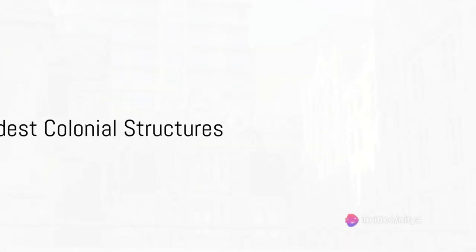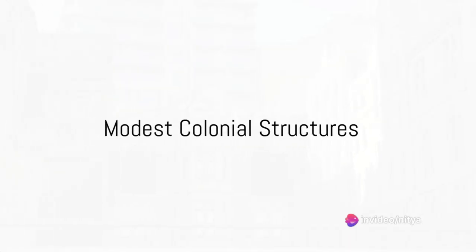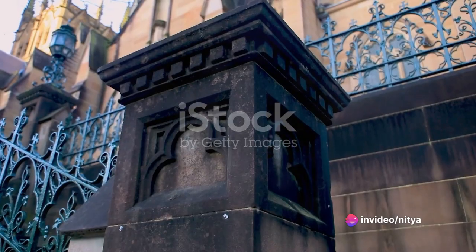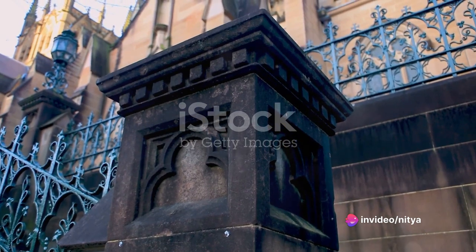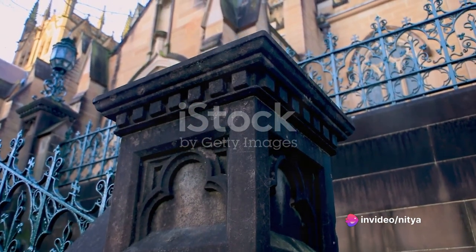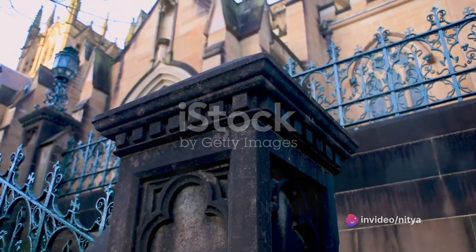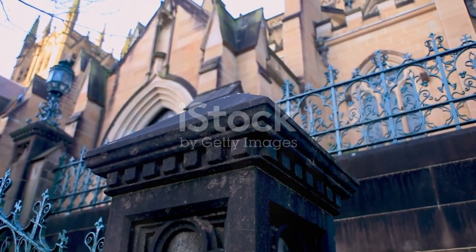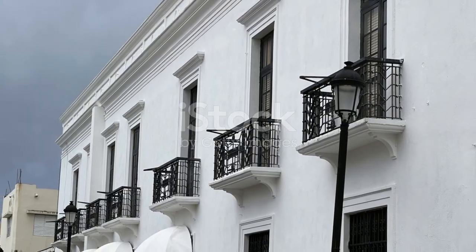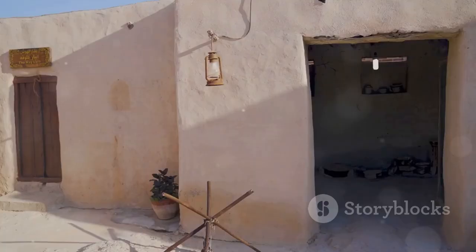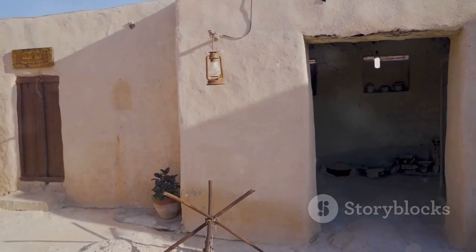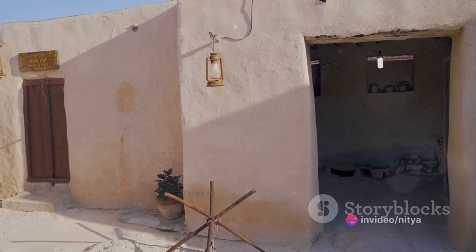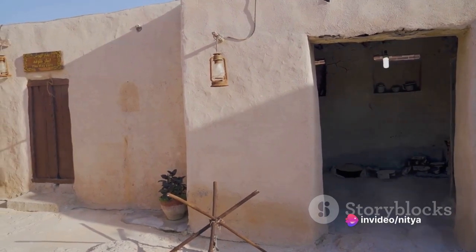The early colonial period bore witness to basic yet practical structures. British settlers, arriving in the late 18th century, brought with them Georgian architectural styles. The structures were simple and functional, reflecting the harsh realities and strict necessities of colonial life.